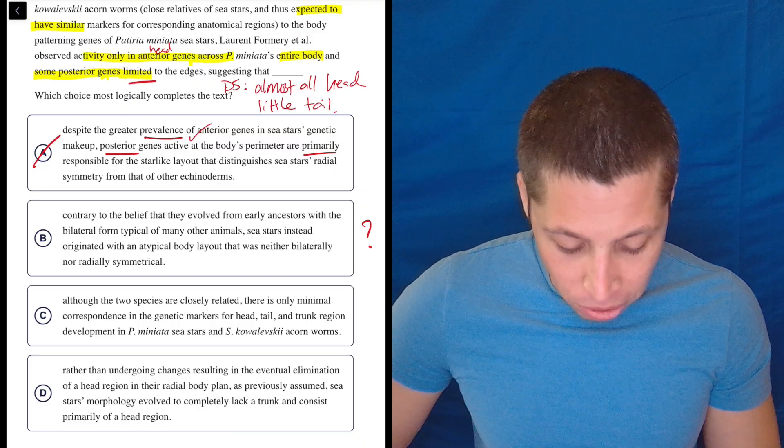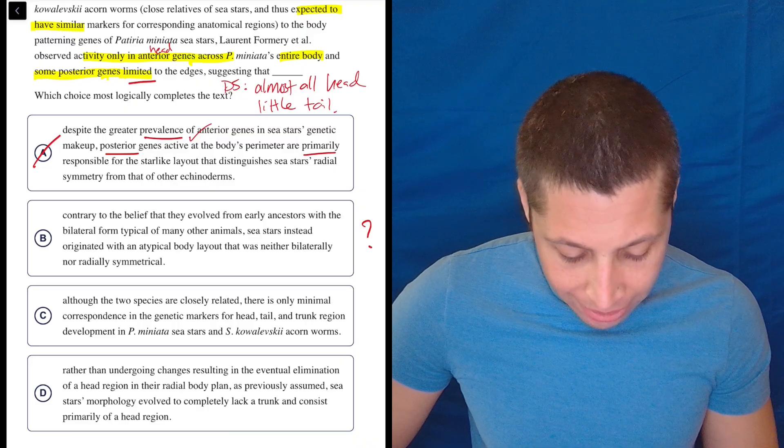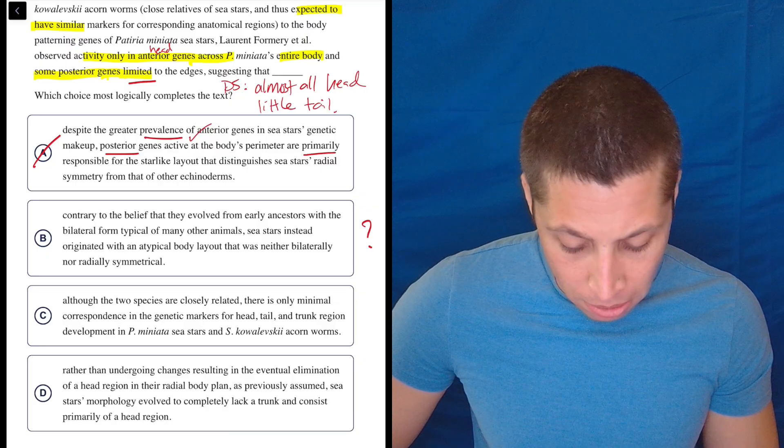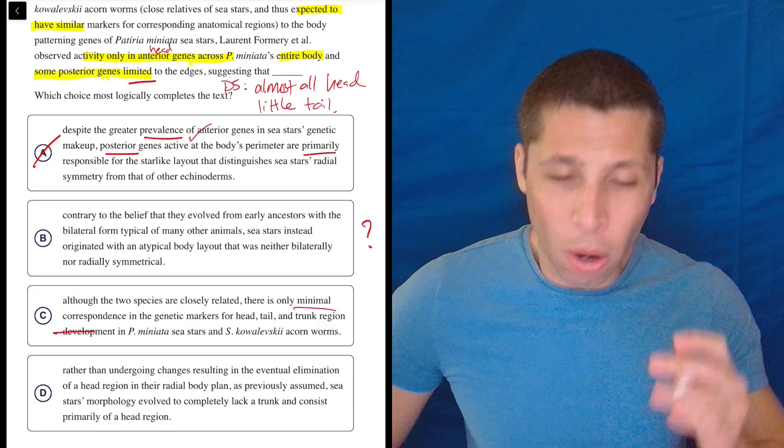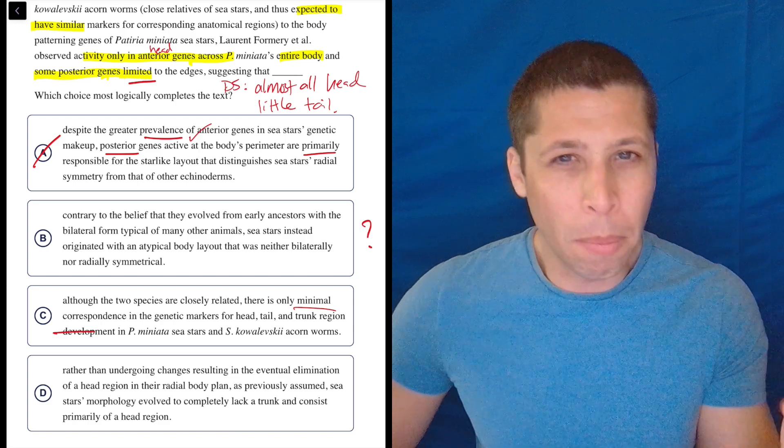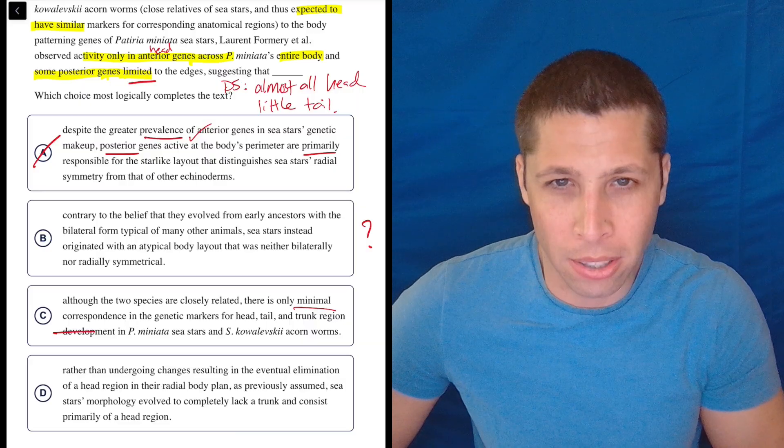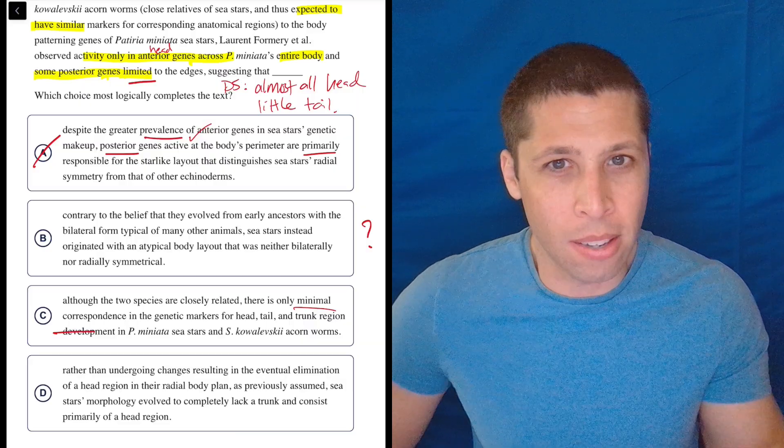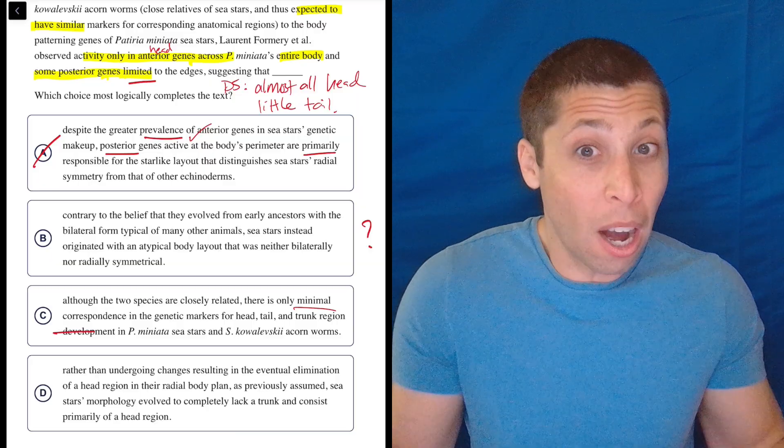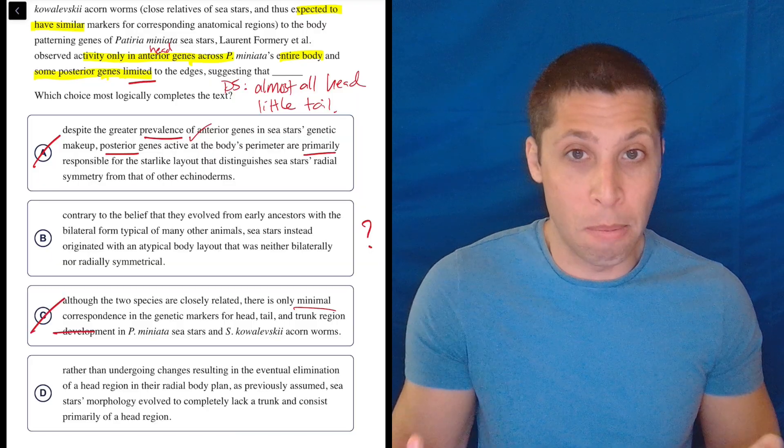C. Although the two species are closely related, there is only minimal correspondence in the genetic markers for head, tail, and trunk region development in the sea stars and the acorn worms. Well, minimal correspondence. Isn't the whole point of this that we're comparing the worm to the sea star? So if you tell me that there's minimal correspondence, aren't you telling me that that's a bad comparison? I thought the whole point was that this is how we know anything about the sea star is that they're similar. So this seems to be undermining the experiment. So I don't like this at all. This seems bad.